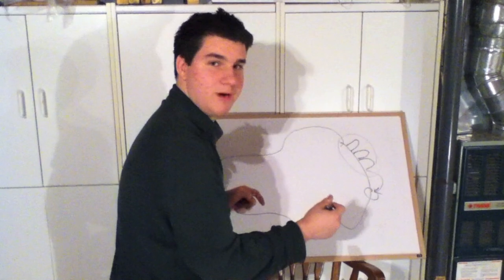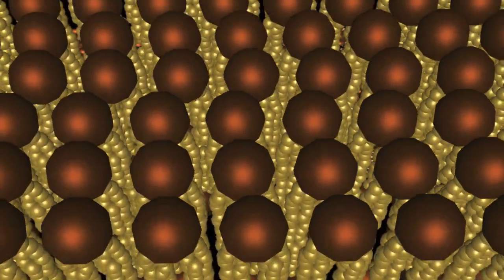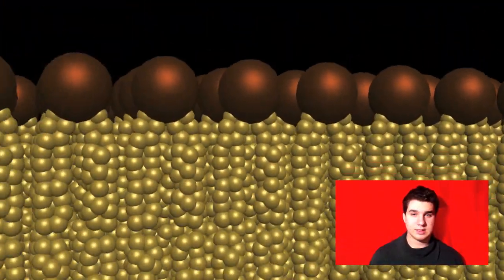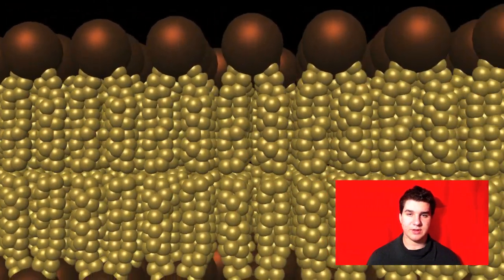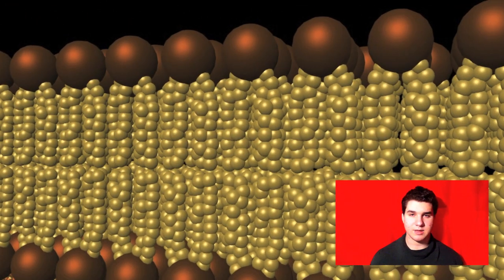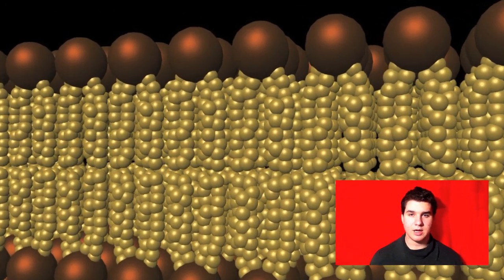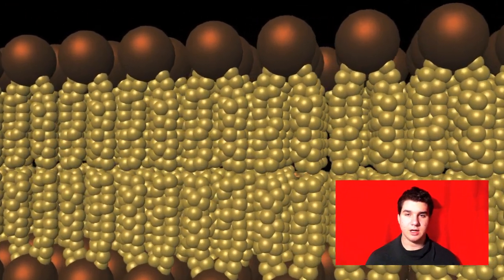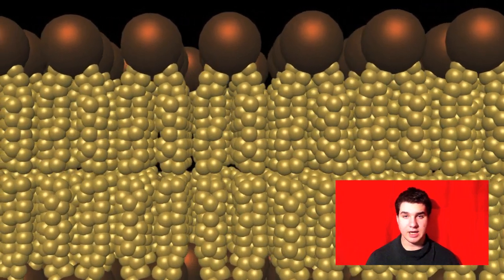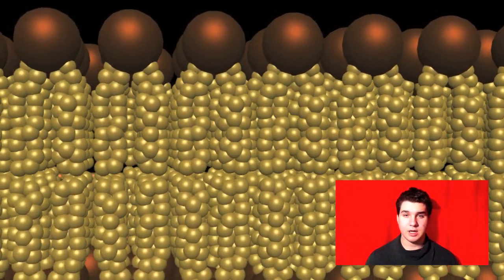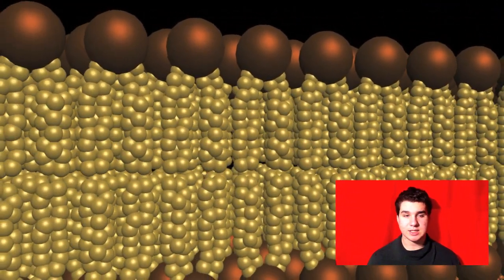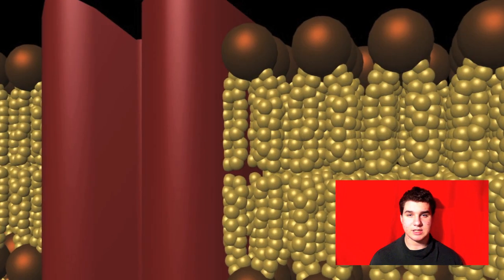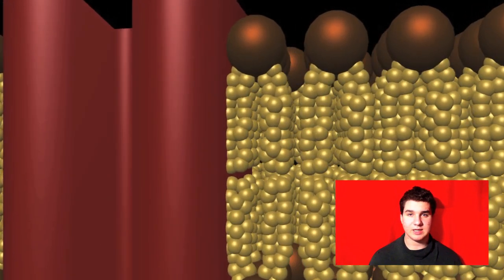The lipid bilayer: the cell membrane is a double layer of phospholipids containing the hydrophilic, water-loving heads and the hydrophobic, water-fearing tails. It protects the cell and contains many proteins that perform vital functions.